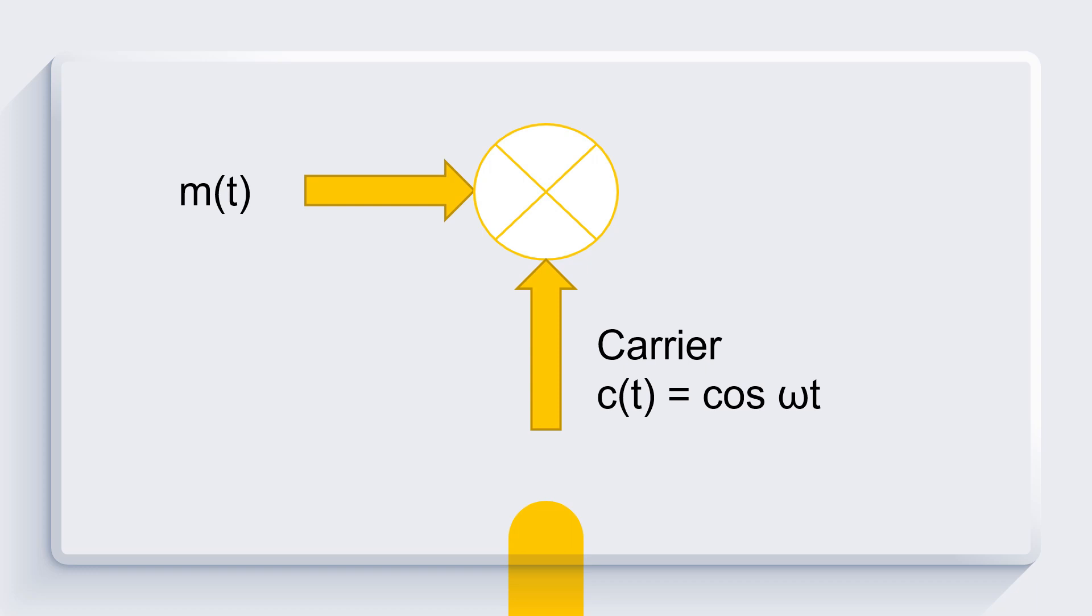And as a product of these two, we have amplitude shift keying output. Now, let's see this m(t), that is our digital signal in terms of binary numbers, ones and zeros.